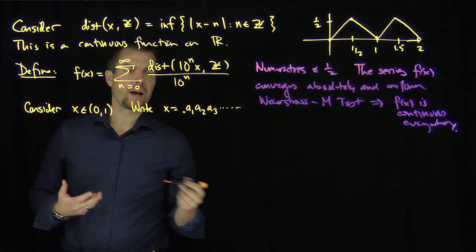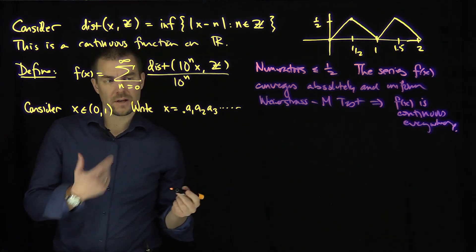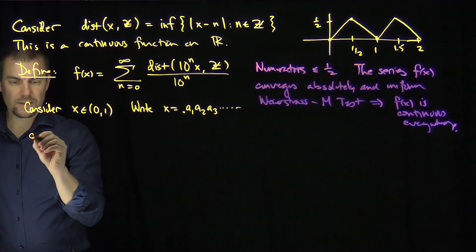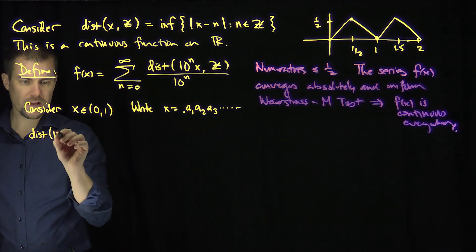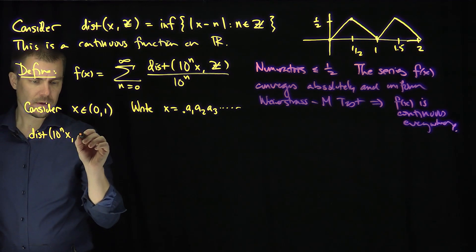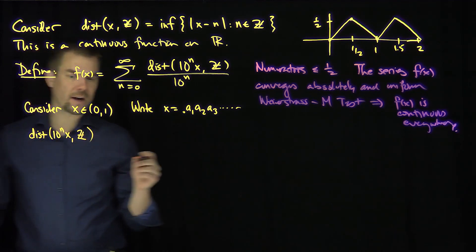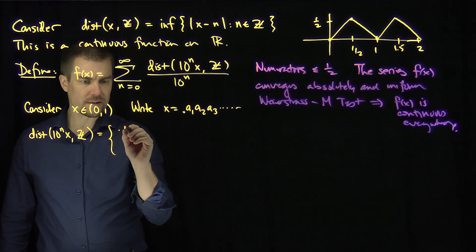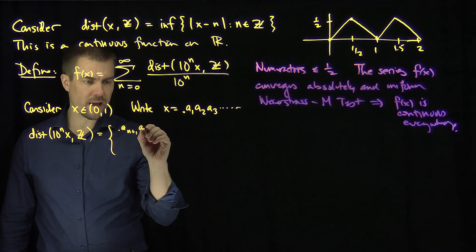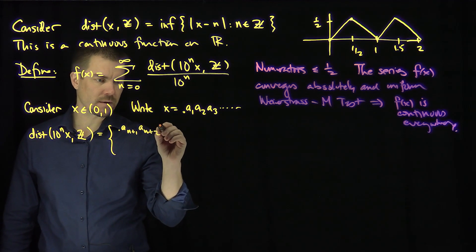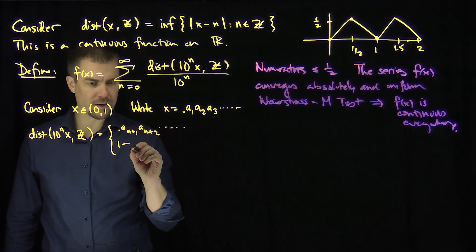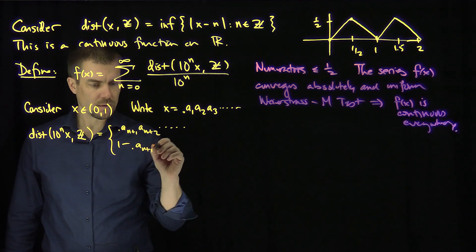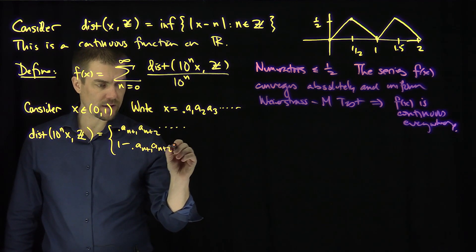And so now what is the distance from 10^n x to the integers Z for this value x? It's going to be one of two things. It's either going to be 0.a(n+1), a(n+2), etc., or 1 minus 0.a(n+1), a(n+2), etc.